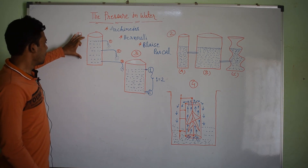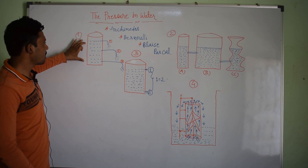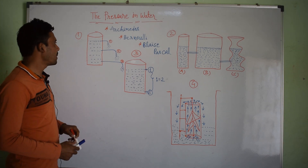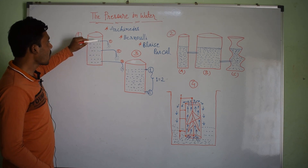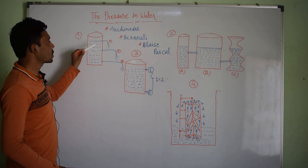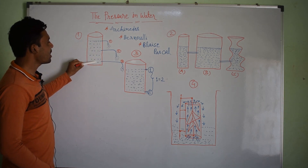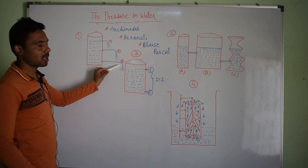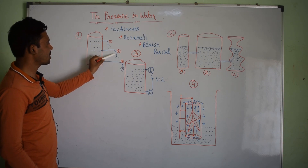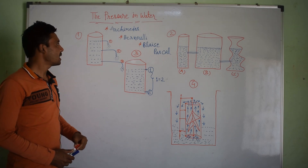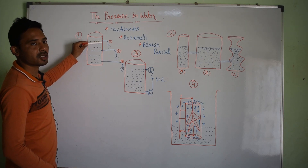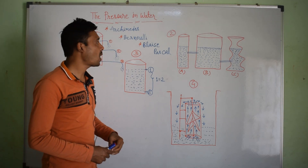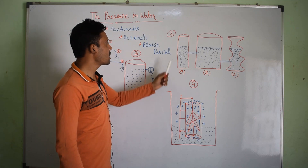This container has water, and when we have three levels — level one, level two, and level three — and we allow the water to move out, we see that the highest pressure lies at the bottom because the water flows the farthest. At the second level, the water level is highest but the water pressure is the least.